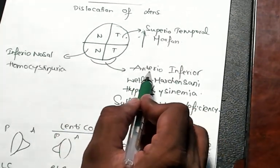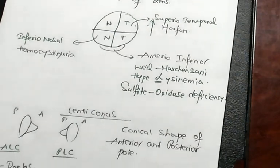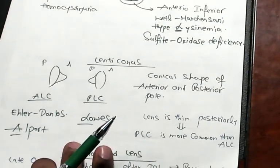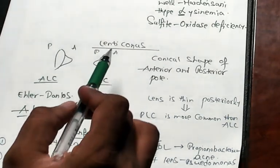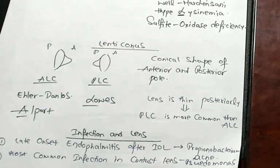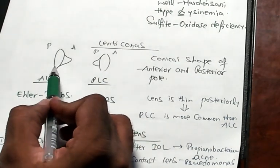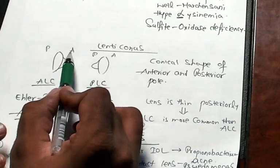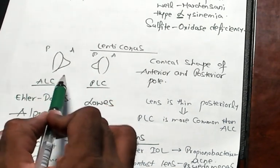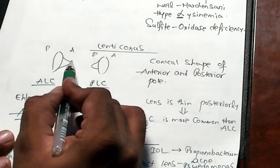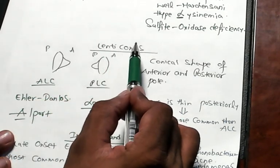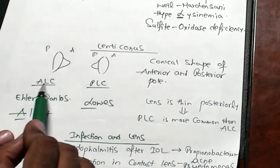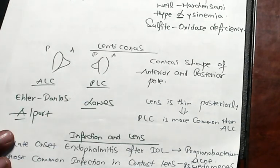Now doctor, lenticonus, one of the favorite questions of the examiner. If this is the lens, anterior with a posterior pole, if this pole is having a conical distension, then you call it as lenticonus. This is the anterior lenticonus, this is the posterior lenticonus.